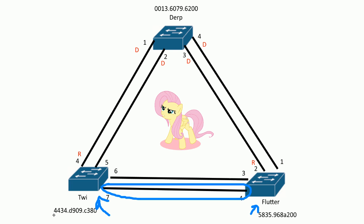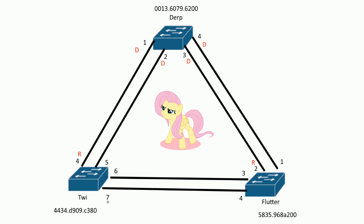So the next tiebreaker is the bridge ID. Since the bridge priority of 32768 hasn't changed, we have to look at the MAC address. This switch starts with four and this with five. This side wins because it has the lower hexadecimal digit, comparing left to right — just like finding the root bridge. So twine wins the role of designated. The same thing applies to port six on this link — it follows the same steps and also becomes designated.